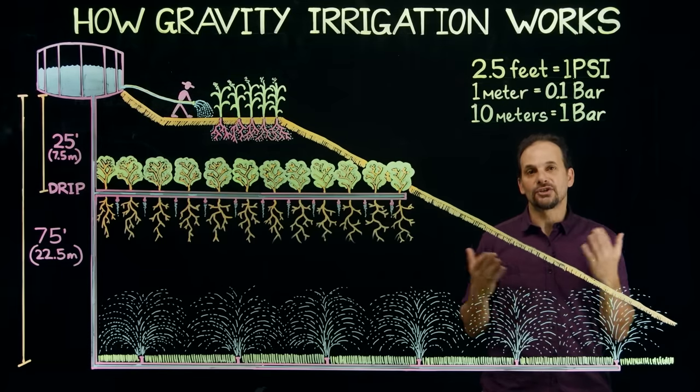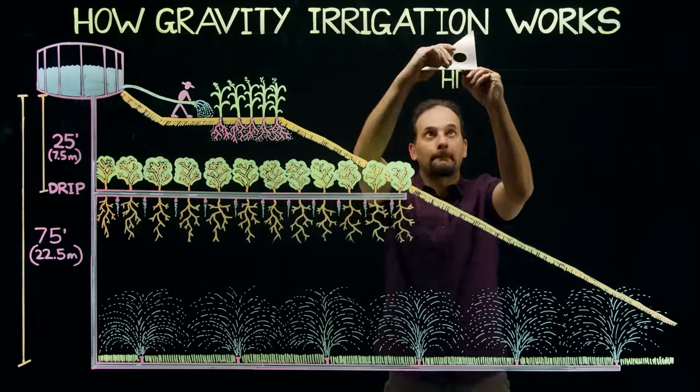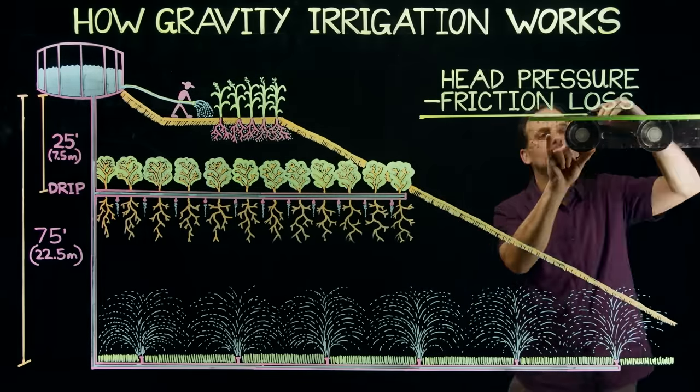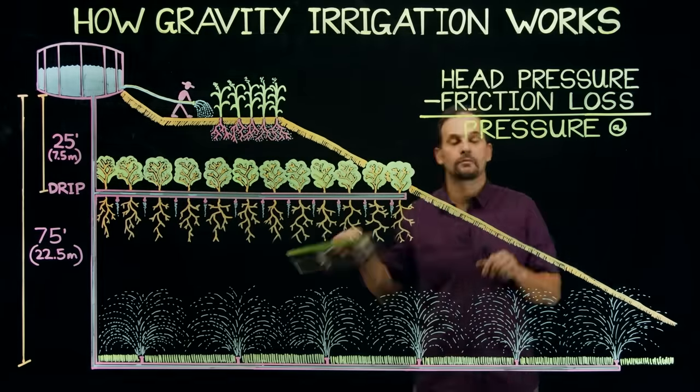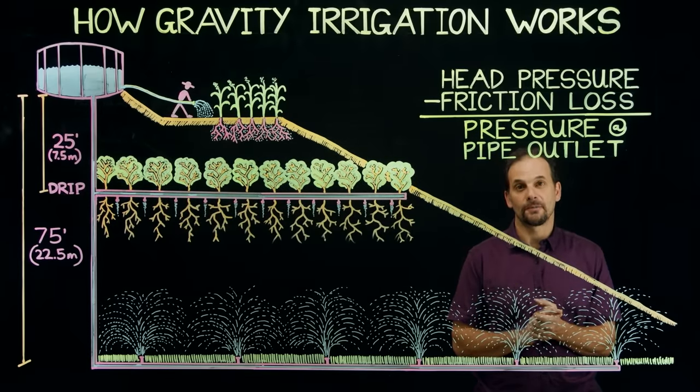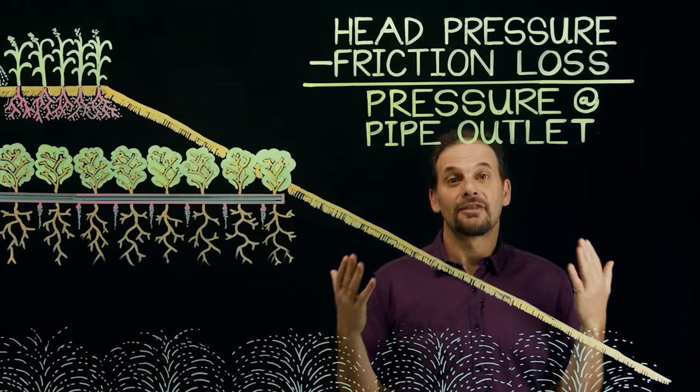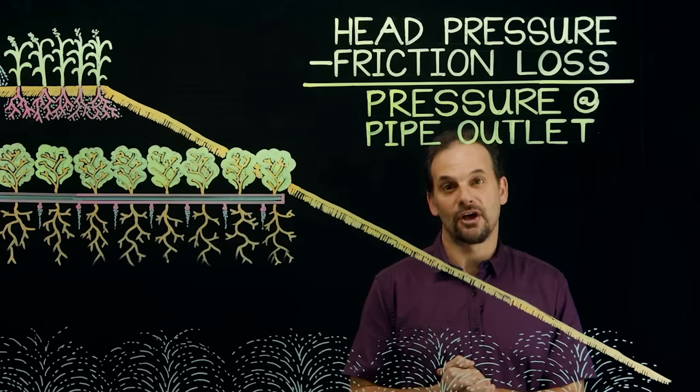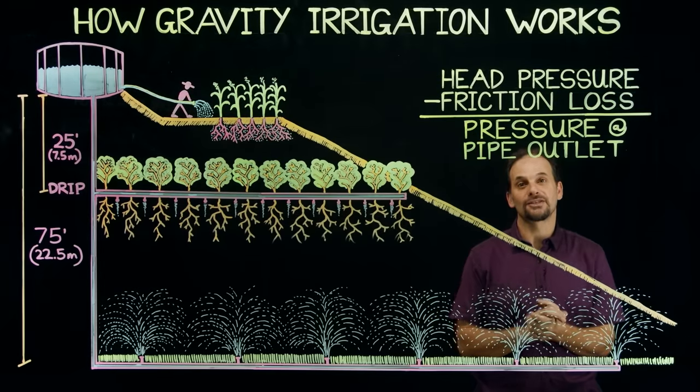It's not just elevation that determines the water pressure, though. There's also friction loss in the pipes. So the equation you need to know is head pressure minus friction loss equals pressure at the pipe outlet. Now, how do you figure out what your friction loss is? Friction loss depends on your pipe size and material, and this involves complex math to figure out. But luckily, the math has already been done for you. There are charts you can look up to determine the friction loss by pipe type and diameter. I've posted links in the description to places you can find those charts.